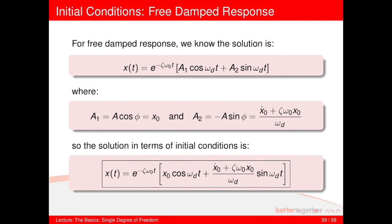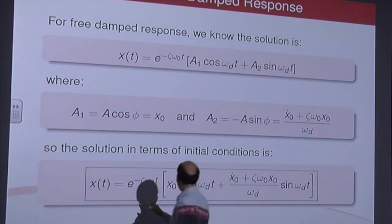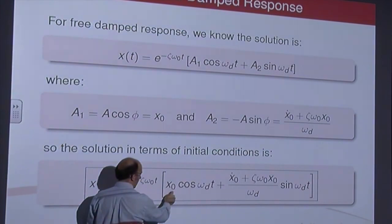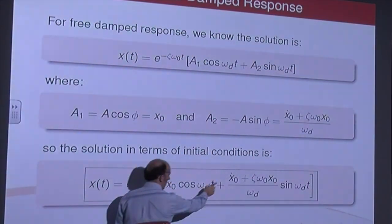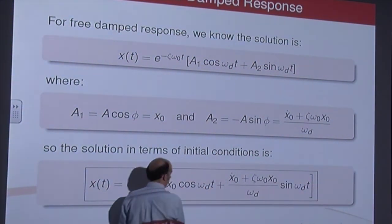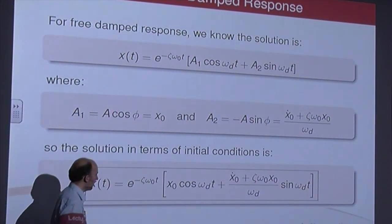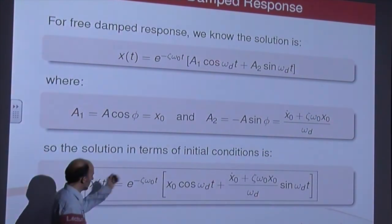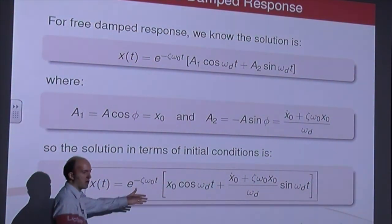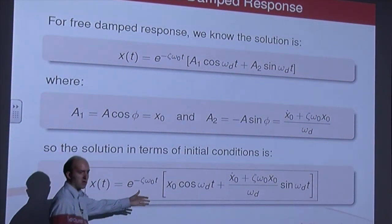This is on your equation sheet. So if you have a free damped system, you can jump straight to the solution. If you know the initial conditions, and you can work out zeta, omega-zero, and omega-d, you just plug the numbers in and get the solution directly.